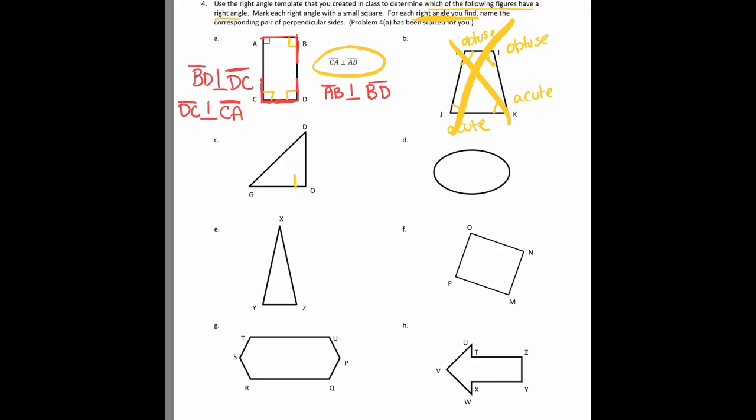And if we look at figure C, it's a right triangle. The only right angle I see is at GOD, which means that sides DO and OG are perpendicular.